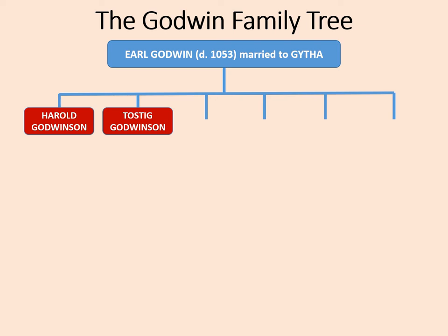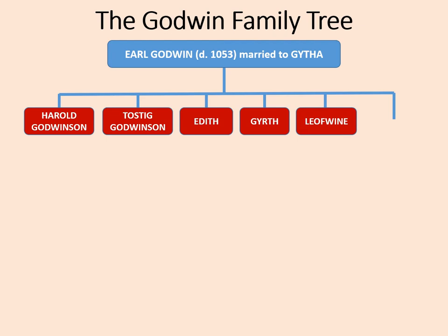They had lots of children. We're going to cover the ones most important to our story: first, Harold Godwinson; also Tostig Godwinson; a daughter, Edith; another son, Githa; yet another son, Leofwine; and finally Wulfnoth.